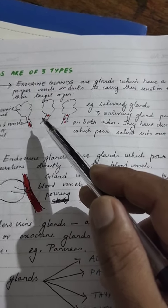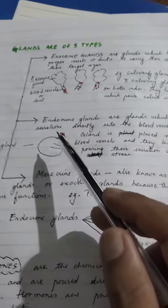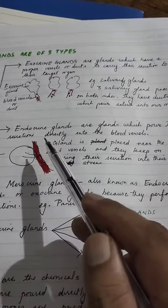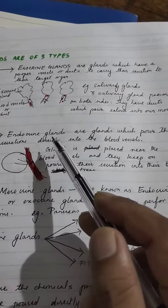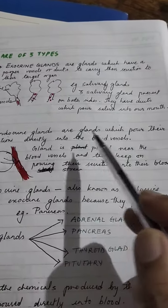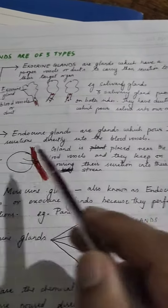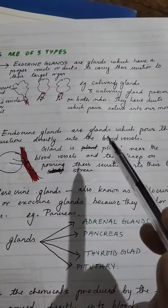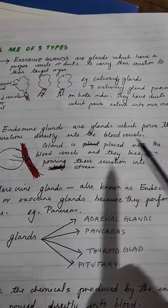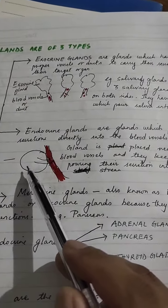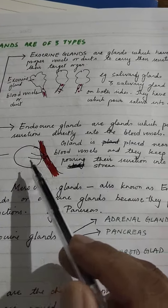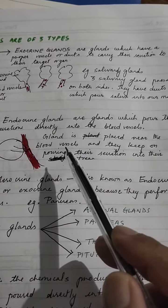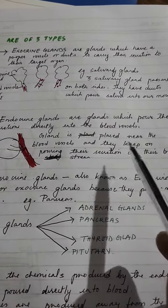Next, we have the endocrine glands. Endocrine glands are glands which pour their secretions directly into the blood vessels. For example, an endocrine gland is placed near the blood vessels and keeps pouring its secretion into the bloodstream.